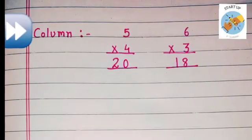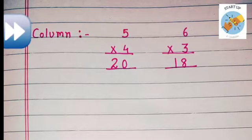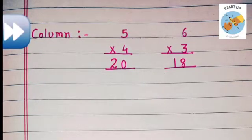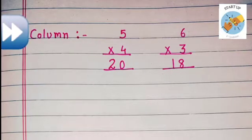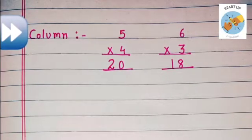Let us see how we can write it in a column. Here see, 5 multiplied by 4 is equal to 20. 6 multiplied by 3 is equal to 18. These two sums are written in a column.